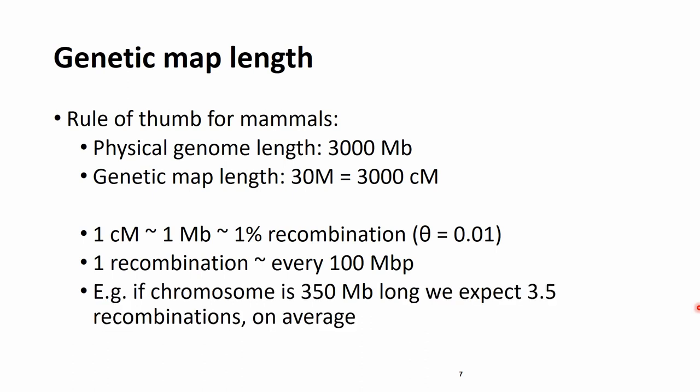What this means is that we expect 1 recombination in 1 meiosis every 100 megabases. This also means that if a chromosome is, for example, 350 megabases long, we expect 3.5 recombinations on this chromosome on average. Of course, we do not have half recombinations, and this 3.5 recombinations is really just an average, because sometimes we could observe 0, 1, 2, 3, 4, 5, 6 recombinations. So it's always a whole number, but it can vary. But if we would look at the population and the chromosome of this length, we would expect this number of recombinations to occur.